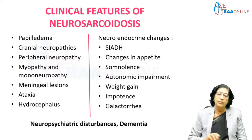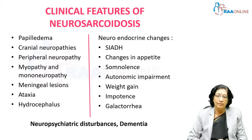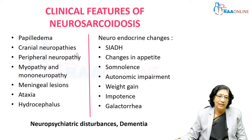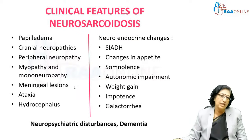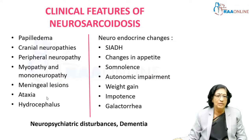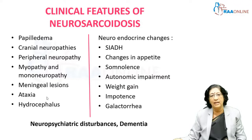The clinical features of neurosarcoidosis may be very variable. It can present with papilledema, affect the cranial nerves, peripheral nerves, and muscles, and can also affect the meninges producing meningeal lesions. The cerebellum can be affected, seizures can occur, and hydrocephalus may develop.